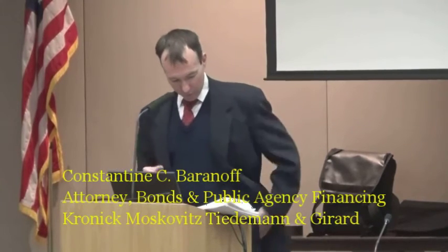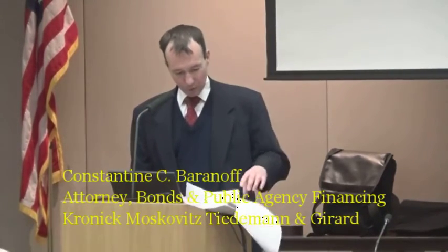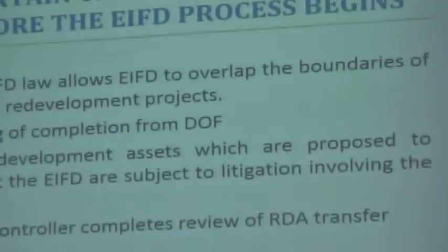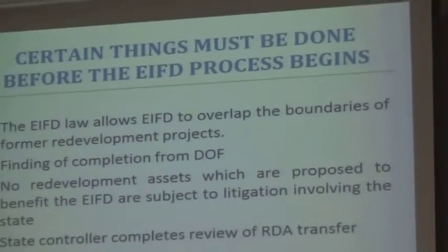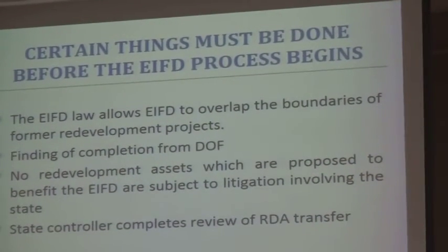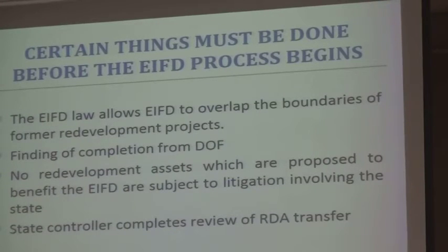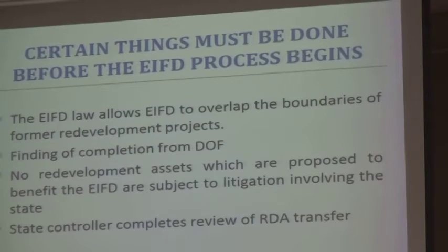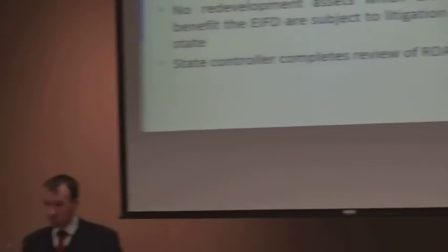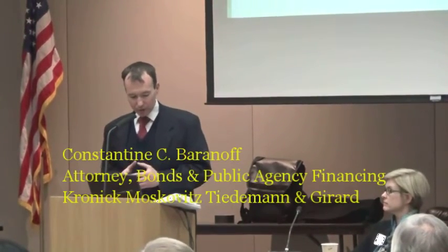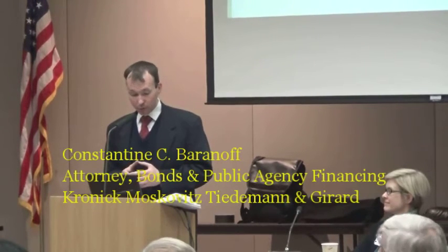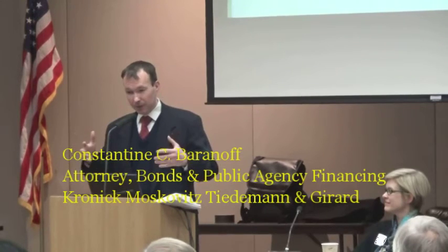There are certain things that must be done before the EIFD process begins. The EIFD law provides for boundaries to overlap those of former redevelopment agencies. The successor agency to the city or county participating in the process must have received the finding of completion from the Department of Finance. The city or county must certify that no former redevelopment agency assets proposed to benefit the EIFD are subject to litigation involving the state. Also, the state controller needs to complete his review of post-January 2011 transfers, and the agency must be complying with those findings.